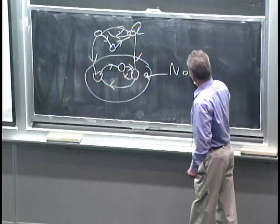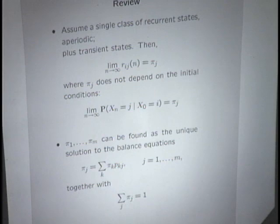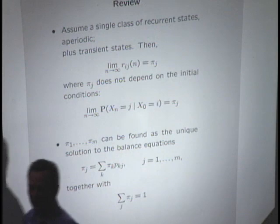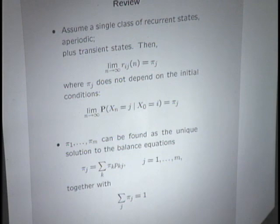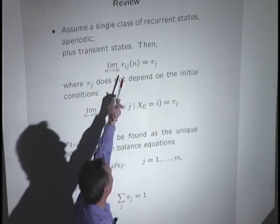These are the nicest kind of Markov chains because they have the following property: the probability that you find yourself at some particular state j at time n, when that time is very large, settles to a steady state value denoted pi sub j. There are two parts to this statement: first, the limit exists, and second, that probability is not affected by the initial state i. No matter where you started, the probability of state j is going to be the same in the long run.